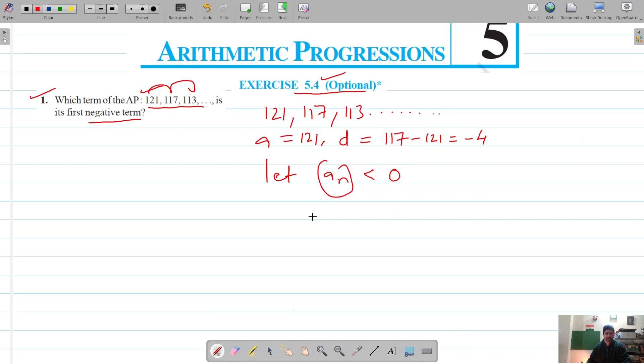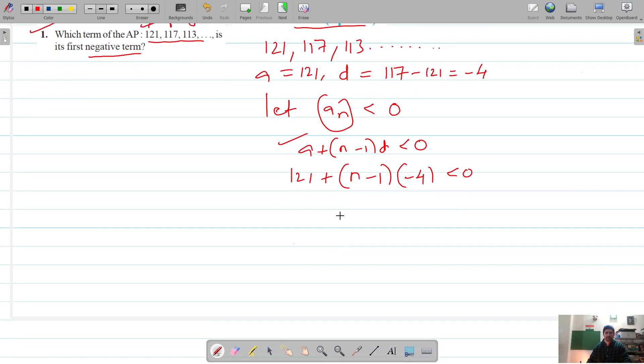It's a plus n minus 1 into d is less than 0. The value of a is 121, we don't know the value of n, and d is negative 4, less than 0. So this gives me n minus 1 into negative 4 is less than negative 121.